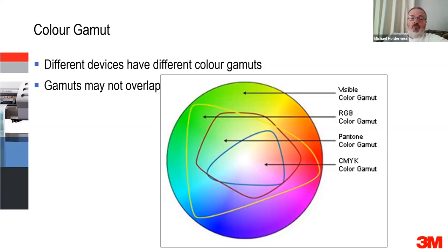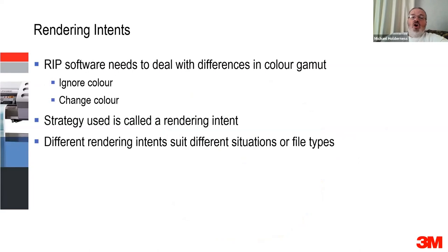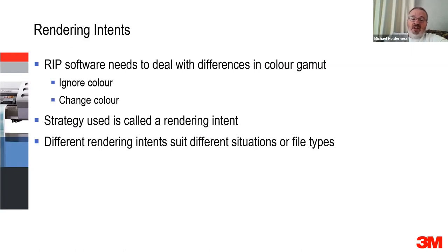We go through a thing called rendering intent. The rendering intent is a way for the RIP software to deal with differences in color gamut — it can either ignore it or change it. Different rendering intents will suit different situations or file types.